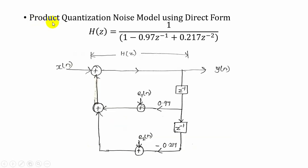Now we are going to draw the product quantization noise model using the direct form realization. The input is x(n) and output is y(n). Since we have only poles, the first term is x(z). The second term is −0.97z⁻¹, which is the coefficient of y(z): the output y(n) is delayed by one unit and multiplied by coefficient 0.97. At the end of the multiplier we add an error symbol e1(n), because when rounding off we get a product quantization error.